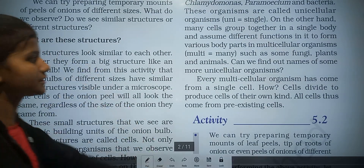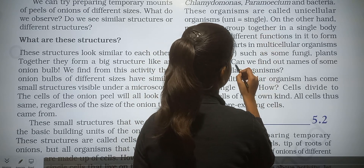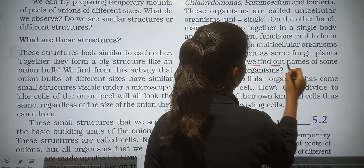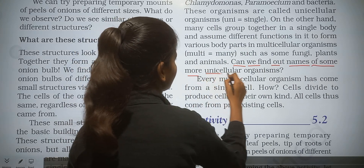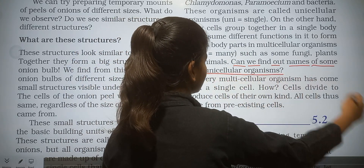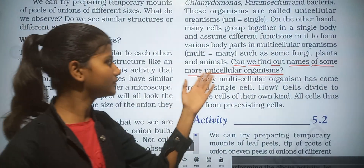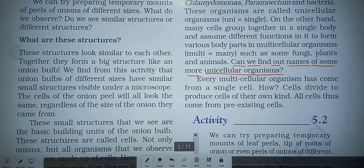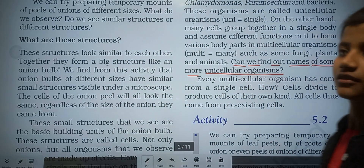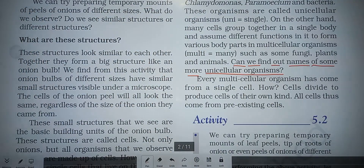Multicellular means many cells and unicellular means single cell. There are many more examples of unicellular organisms, such as cyanobacteria and Mycoplasma, and many more.